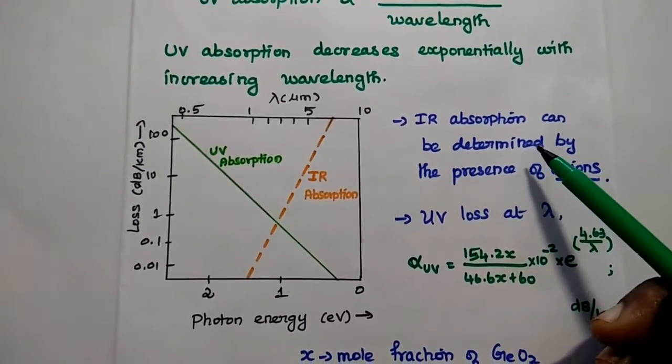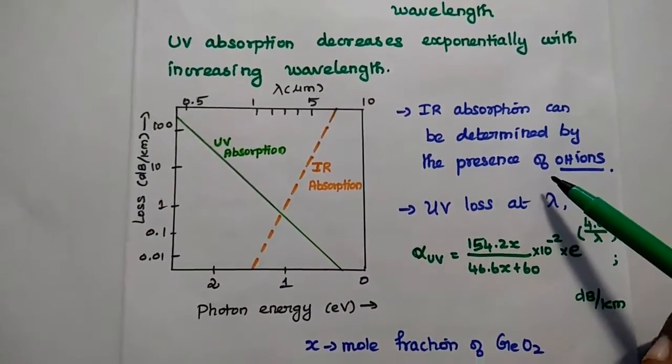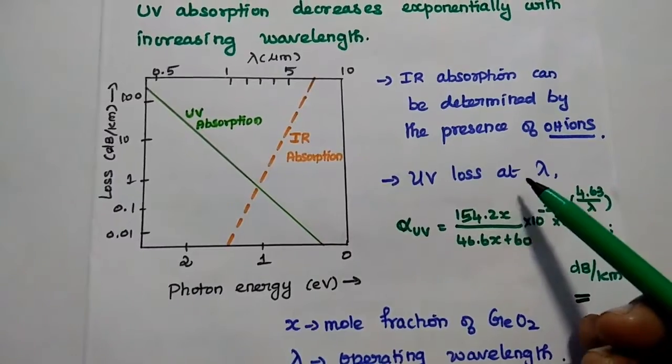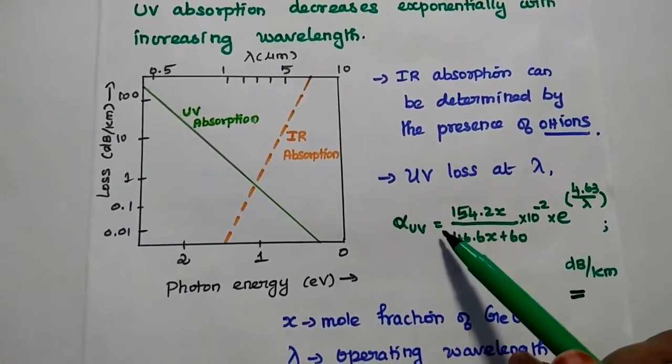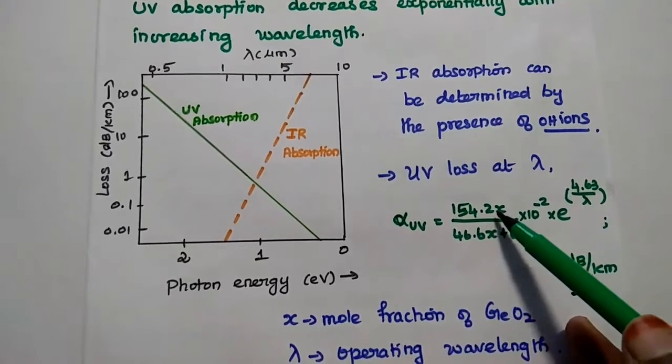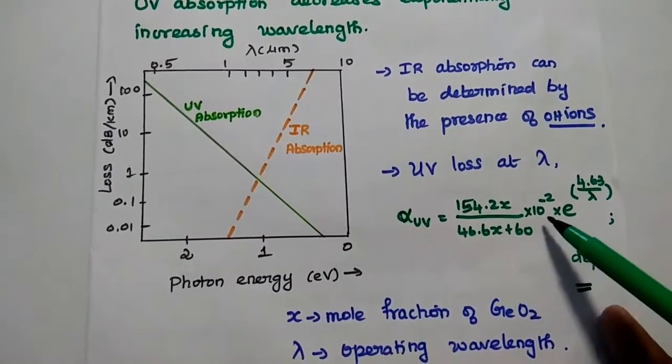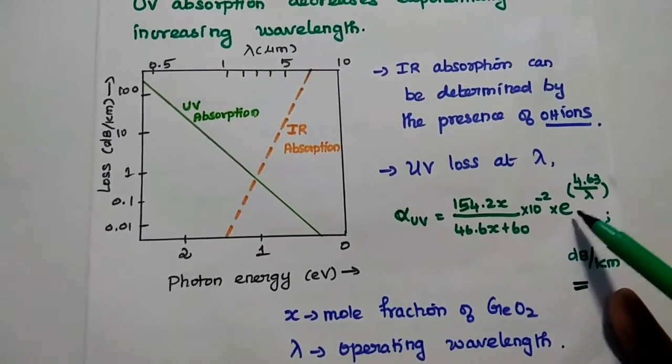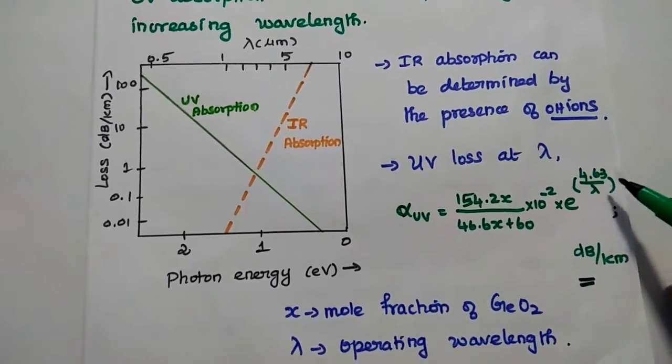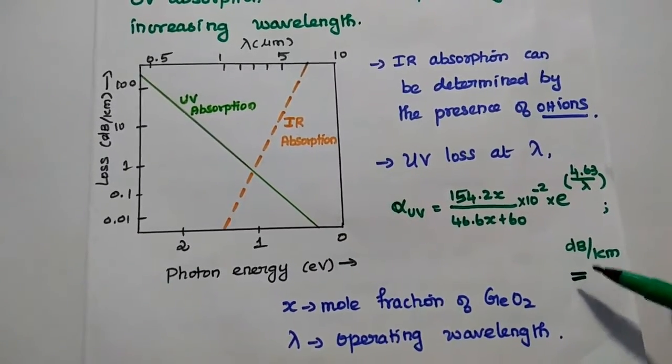The next one is IR absorption that can be determined by the presence of OH ions. UV loss at this particular wavelength can be obtained as alpha UV equals 154.2 X by 46.6 X plus 60 into 10 to the power minus 2 exponential of 4.63 by lambda in terms of dB per kilometer.